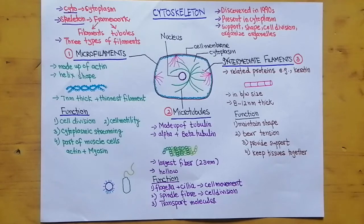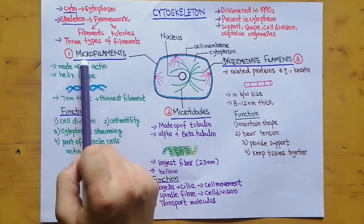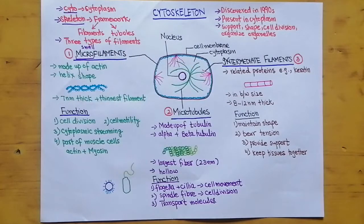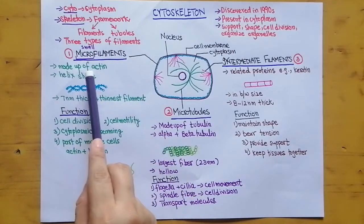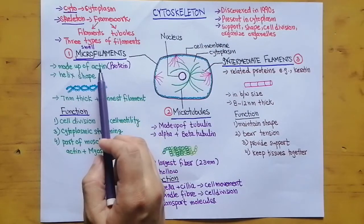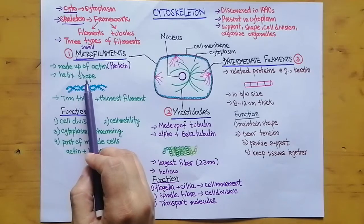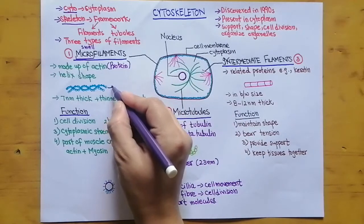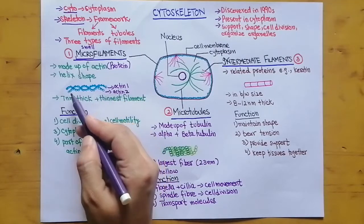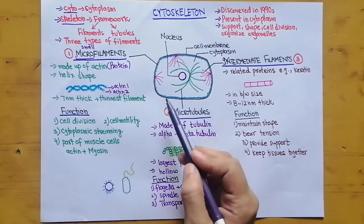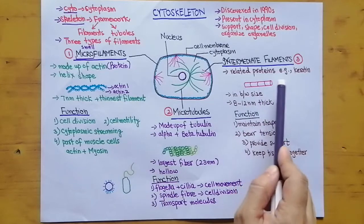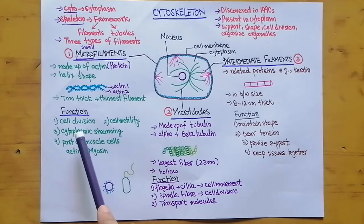Let's talk about the structure of each filament. Starting with microfilaments — the word micro means small. Microfilaments are small filaments made up of actin protein. These actin proteins are arranged in a helical form, with one actin and another actin spiraling around each other to form the microfilament structure. The microfilament is seven nanometers thick and is the thinnest of the three filament types.